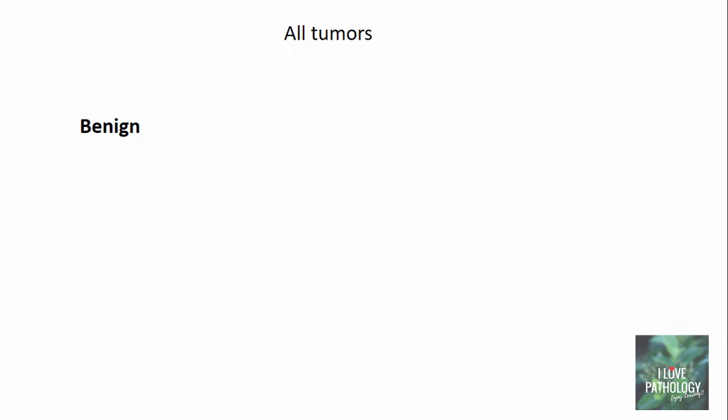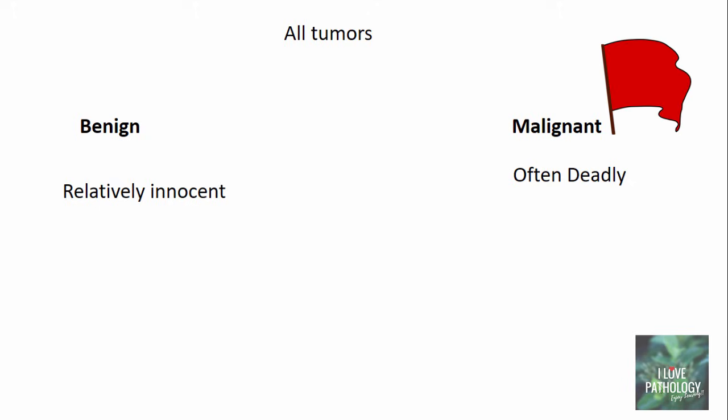All tumors are classified either as benign or malignant. A tumor is said to be benign when its appearance — whether macroscopic or microscopic — looks relatively innocent. Benign tumors are predominantly non-lethal; they are localized, do not spread, and can be easily removed. Whereas malignant tumors are most often deadly. All malignant tumors are collectively called cancers. These are dangerous because they have the ability to invade and destroy adjacent structures.